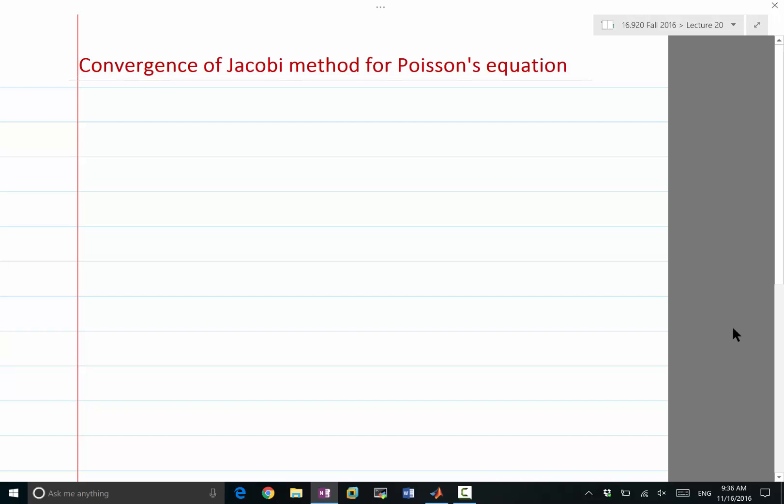Alright, during our last lecture we looked at Jacobi method for solving linear equations, and we applied the Jacobi method to solving the discretized Poisson's equation. We ran 100 iterations and see a solution that looks qualitatively like what we expect, the exact solution.